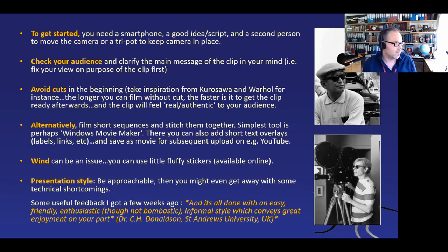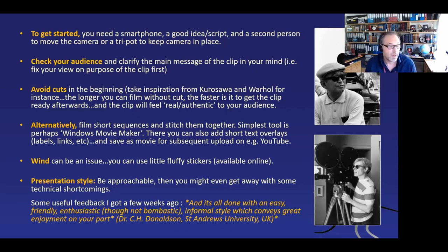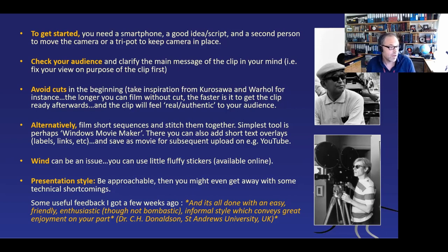You can also make very short clips — 30 seconds here, 30 seconds there — and then stitch them together. The simplest tool for that is Windows Movie Maker or something similar that you have on all PCs these days. If you want to use other software, of course that's fine. You can add little things there — short text, overlays, labels, links, etc. Then you can save it as a little movie and upload it on YouTube.